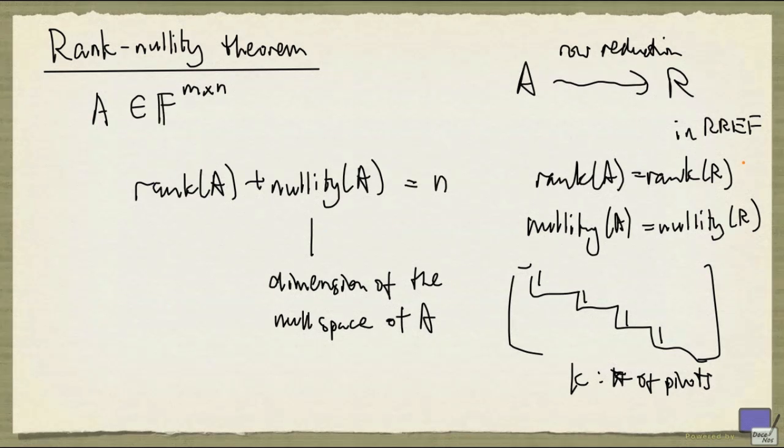So here, rank R is going to be k, and the nullity is going to be n minus k, and adding the two, we get n. And that's exactly what we wanted to prove.